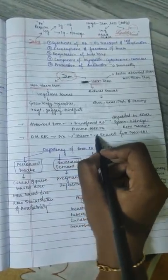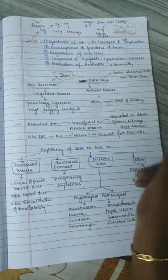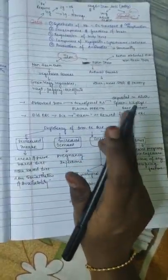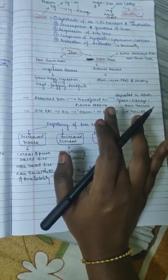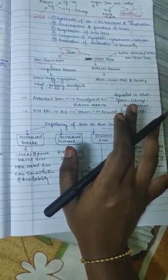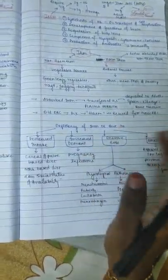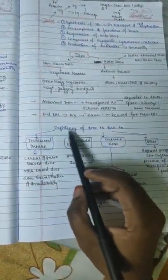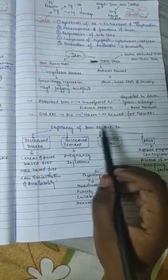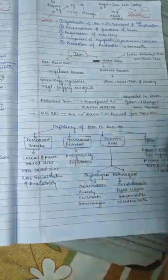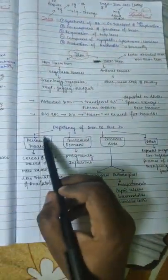Coming to the deficiency of iron, the deficiency is due to some factors and also causes some consequences. First, we will see the causes that lead to deficiency of iron. Decreased intake is one cause.